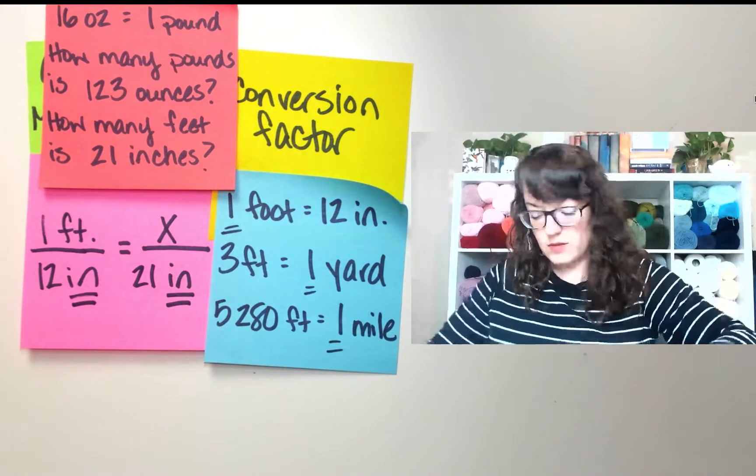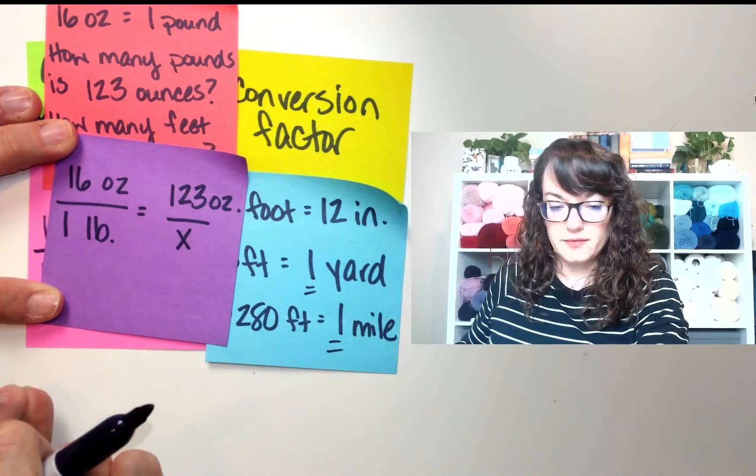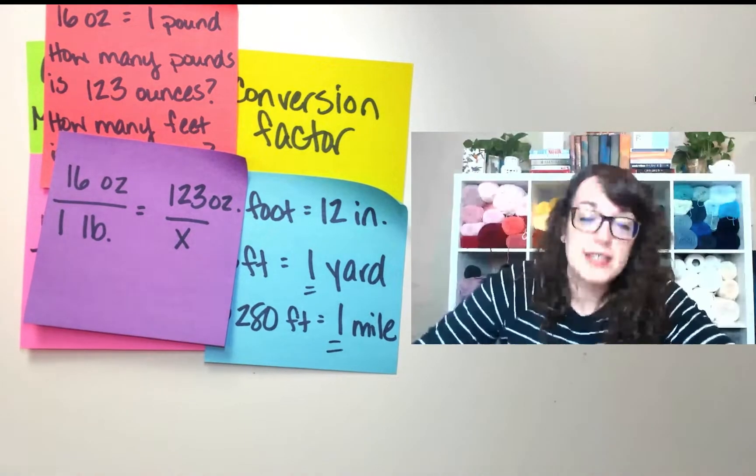With this one, cross multiply and then divide. That's it. Set up a proportion.